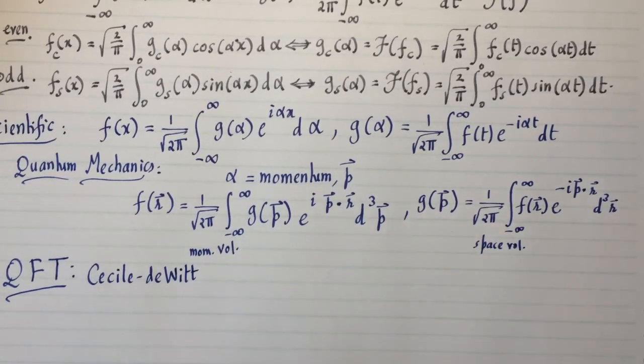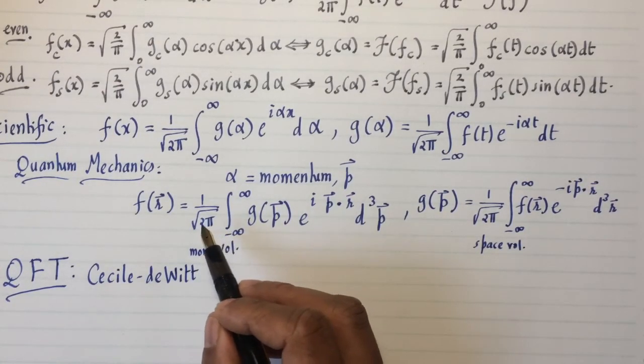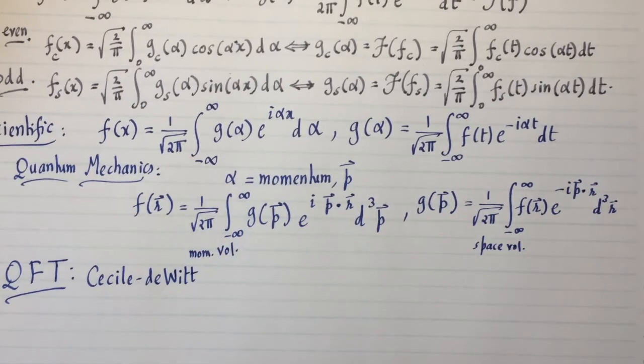So she did not even like the 1 over square root of 2 pi. She was telling us how she was trying very hard to get the physics literature to stop putting the 1 over square root of 2 pi.